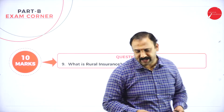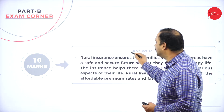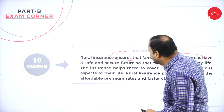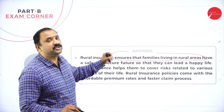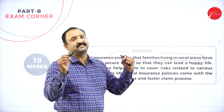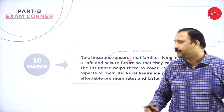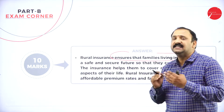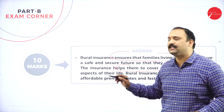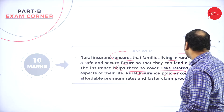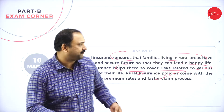The next question is: what is rural insurance and explain its scope? Rural insurance will try to ensure that families living in rural areas will have a safe and secure future so that they can live a happy, secured life. It basically concentrates on rural India. The insurance helps them cover the risks related to their life. Rural insurance policies come with affordable premium rates and faster claim procedures.